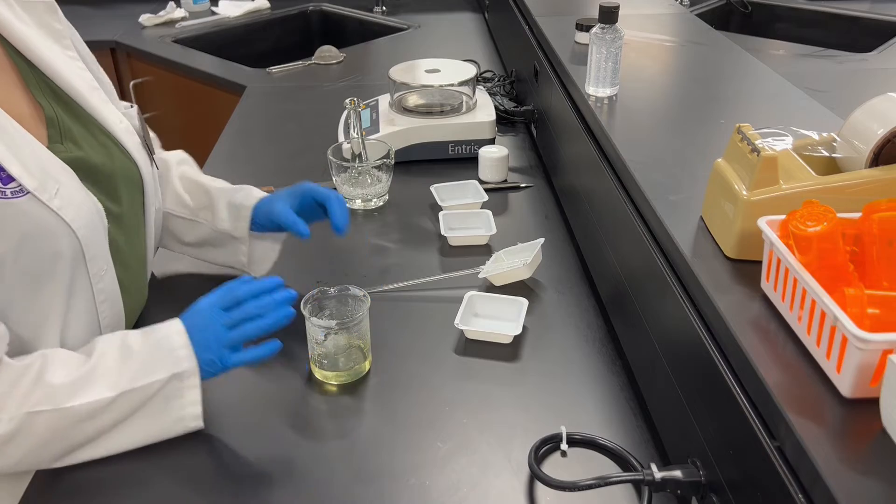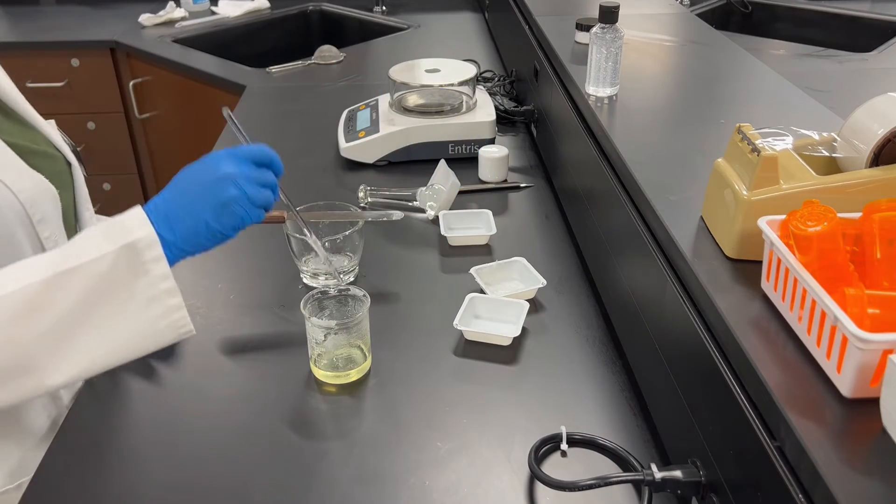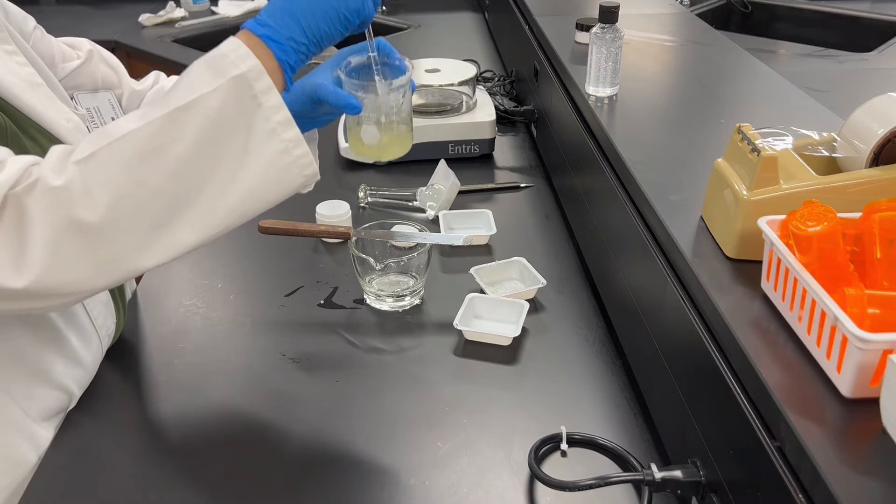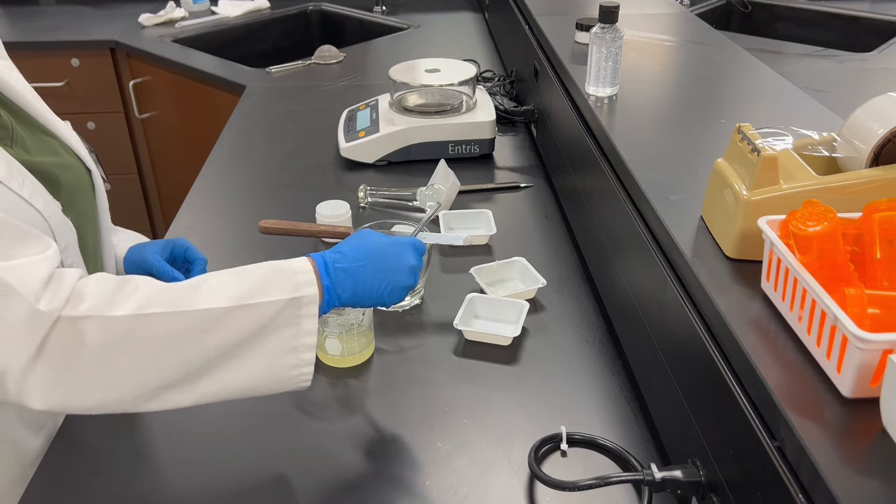Now that it's melted, what you're going to do is you're going to take your glass stir rod and then you are just going to stir it until it becomes cloudy. Once it is cloudy, you can go ahead and add in your ingredients from your pestle and mortar.